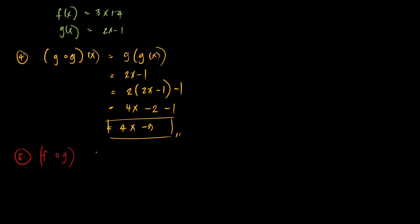Now let's find f composed of g given that x equals negative 2. Since we have a value for x, we will substitute negative 2. Our f is 3x plus 4; insert g of x: 3 times the quantity 2x minus 1, plus 4. At this step, we can either insert negative 2 directly, or we can simplify this expression first, then insert negative 2 afterward. Let's do both solutions.